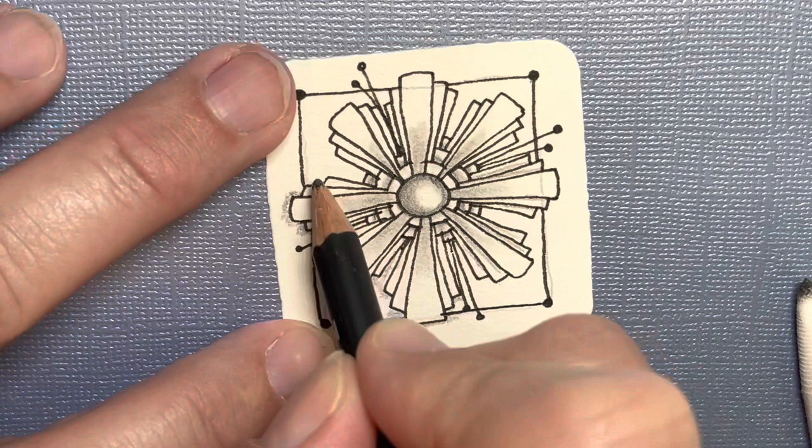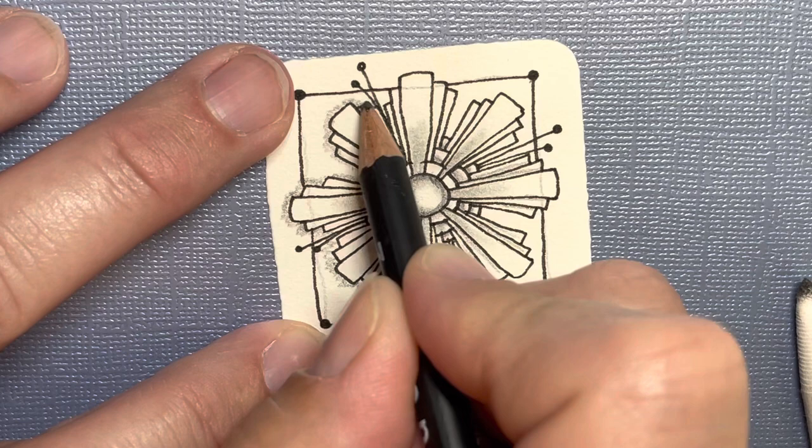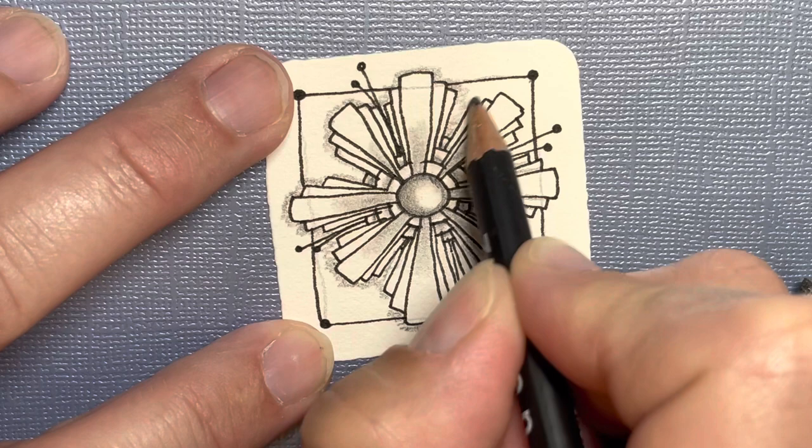So maybe instead, I'll go around on the outside edge of that whole shape and just give it a little bit of shading just to lift it off the page so it looks more like it's floating.